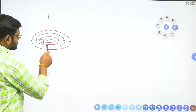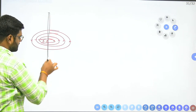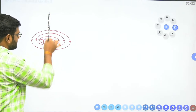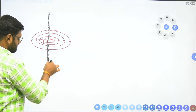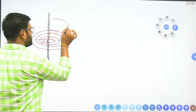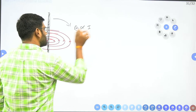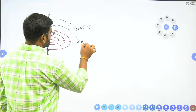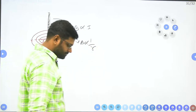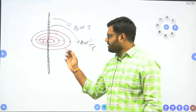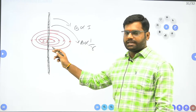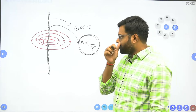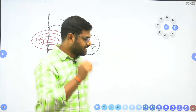As I move away from the current carrying conductor, the magnetic field intensity either increases or decreases. The magnetic field is directly proportional to current and inversely proportional to distance from the conductor. So as we move away from the current carrying conductor, the magnetic field intensity goes on decreasing.